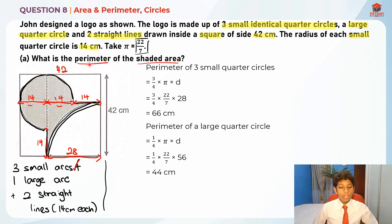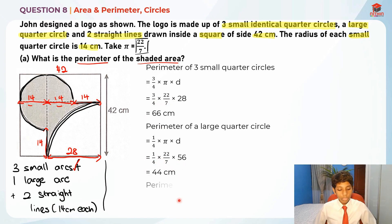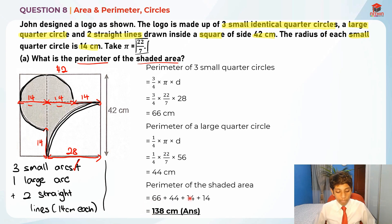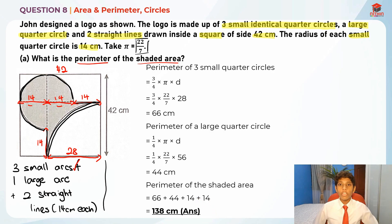Now that we are done with that, in order to find the perimeter of the shaded area, we take 66 + 44 + 14 + 14, which gives us 138cm. So 138cm is the perimeter of the shaded area. Now let's move on to Part B.